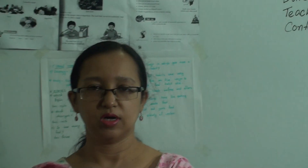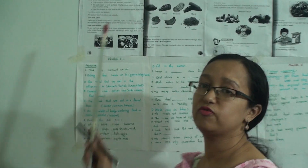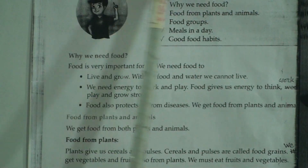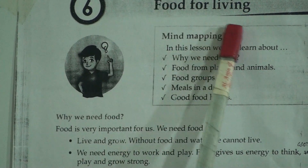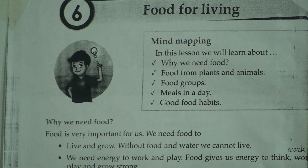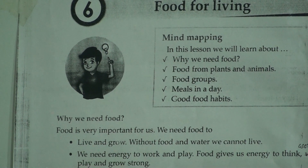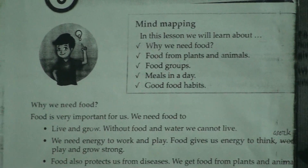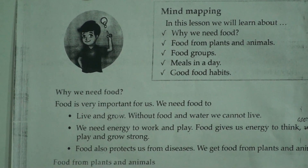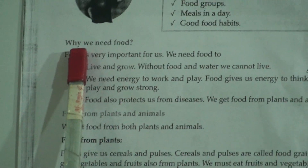Now let's start our class. Today we will discuss chapter 6. The name of chapter 6 is Food for Living. After reading this chapter, we will understand why food is necessary for us, which food is good for us, why we take food, and different kinds of food.